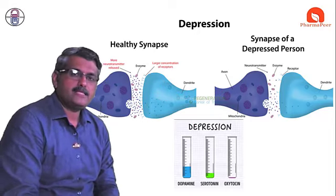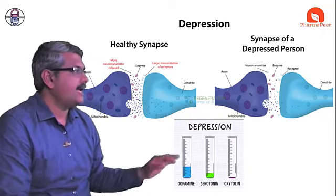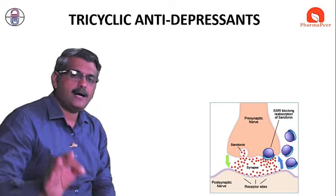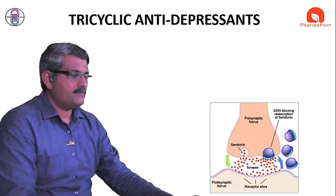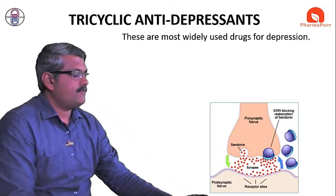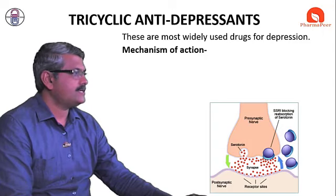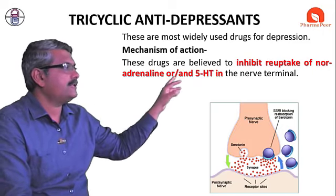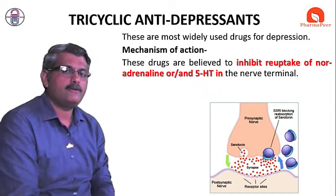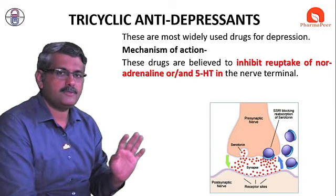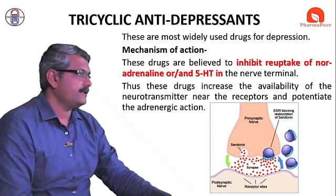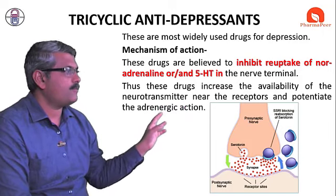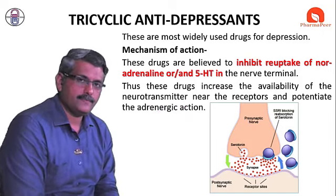In the last lecture we saw the mechanism of action of monoamine oxidase inhibitors. Today we are going to see the tricyclic antidepressants — what they are and how they produce their action. They are the most widely used antidepressant drugs. Their mechanism of action is simple: these drugs inhibit the reuptake of noradrenaline, serotonin, or 5-hydroxytryptamine at the nerve terminal. This increases the availability of these neurotransmitters near the receptors and potentiates adrenergic action.